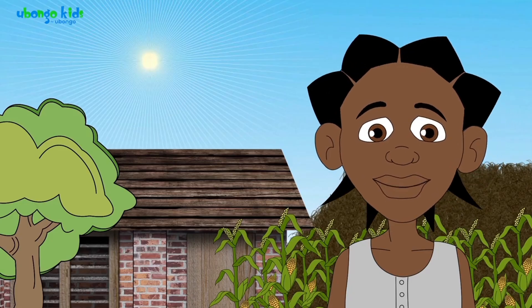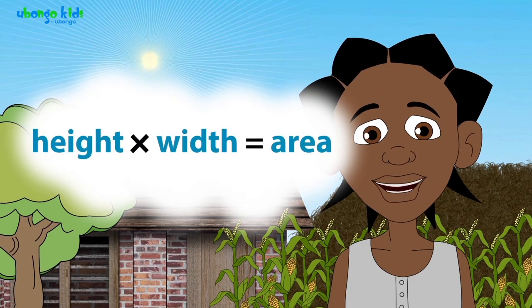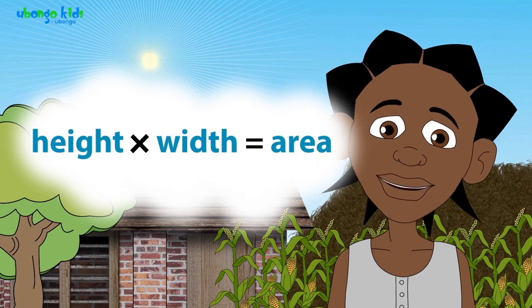The correct way to find the area of a rectangle is to multiply the height by the width.